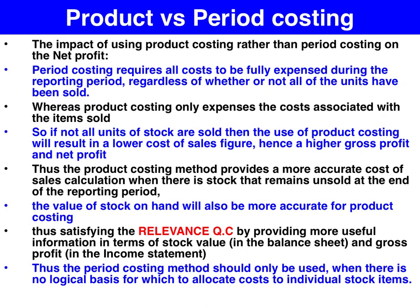In terms of evaluating the impact on profit of product versus period costing, it depends. Because if all the stock items have been sold during the period, then there's no difference — any cost incurred in getting the stock into a condition and/or location ready for sale has been fully expensed regardless of the method used.